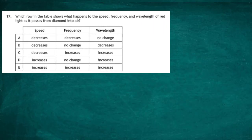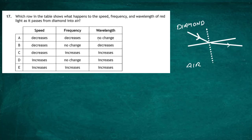Question 17 from Paper 1 of the 2022 Higher Physics Exam from the SQA. Which row in the table shows what happens to the speed, frequency, and wavelength of red light as it passes from diamond into air? We have to be careful because we're going from diamond to air — from a more dense medium to a less dense medium. Looking at the diagram, as the ray of light strikes the normal going from diamond to air, it bends away from the normal.